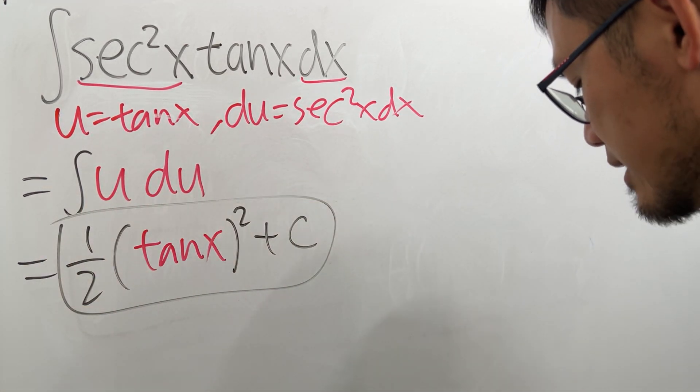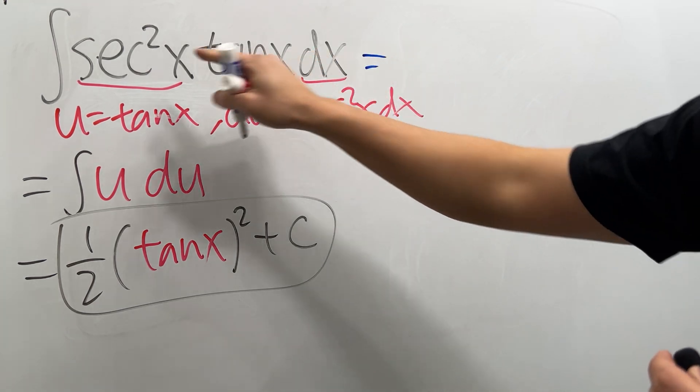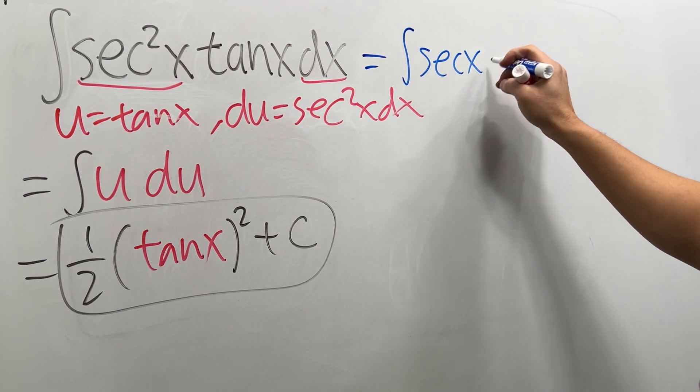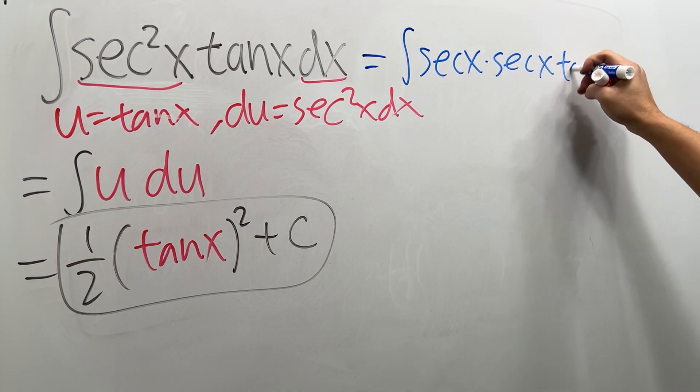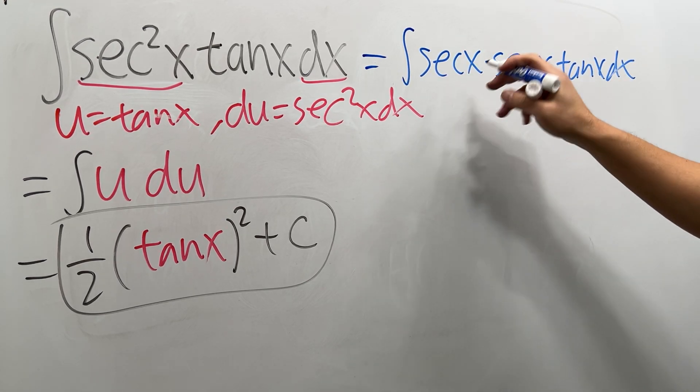right? But some of you guys might also think about it like this. Put the secant out a little bit, so we get secant x times secant x times tangent x dx. From here,